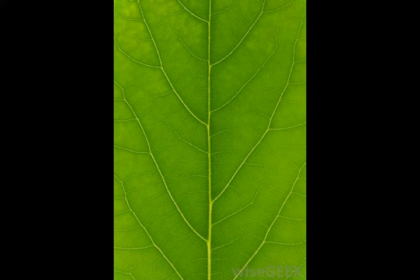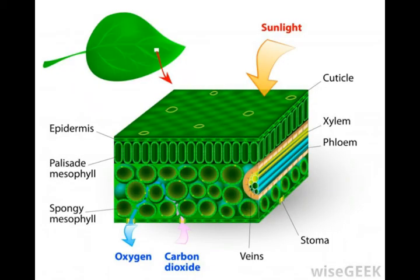Chlorophyll uses the red and blue parts of the light to create the energy required for photosynthesis. Different forms of chlorophyll absorb slightly different colors of light.